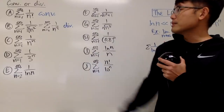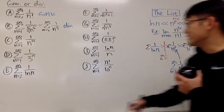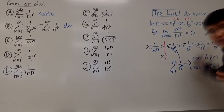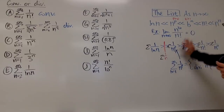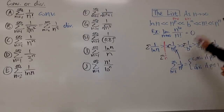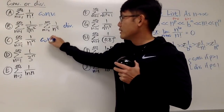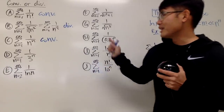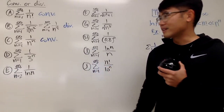For part (c), the series of 1 over n^n — as you can see, this is the smallest zero we have on the list, so this converges. Anything from n^n on the right converges. We just knocked out 3 series in about 10 seconds.